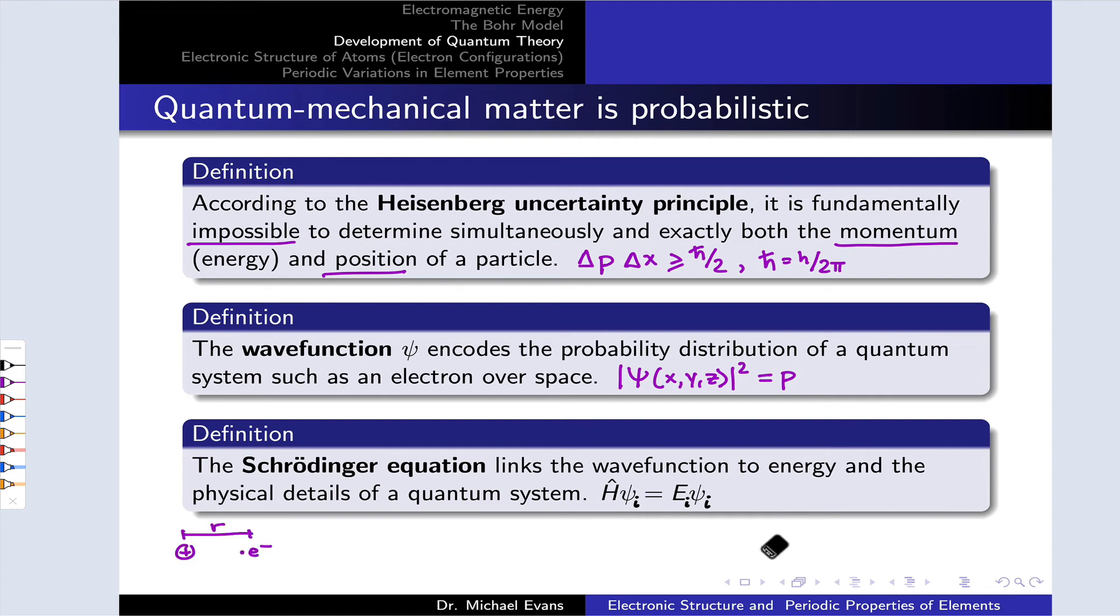To set up the Hamiltonian, which has to be a given, we need to understand the situation in the physical system. For a simple atom like hydrogen, we have a positively charged nucleus, negatively charged electron, separated by some distance r.